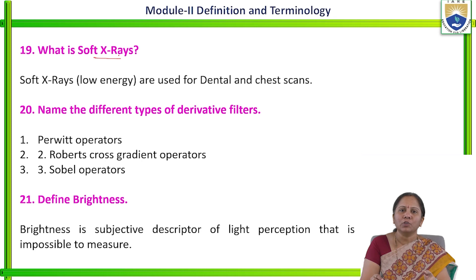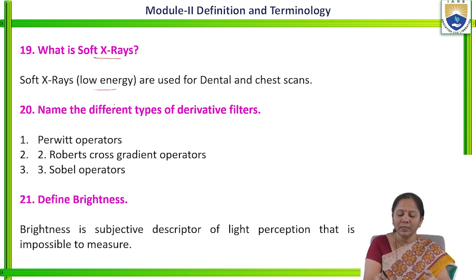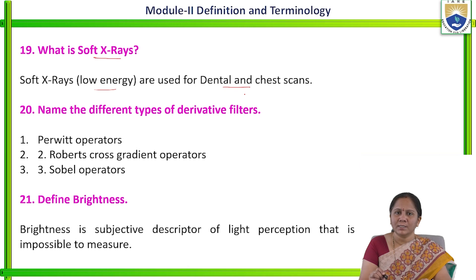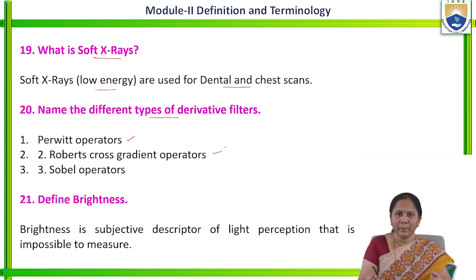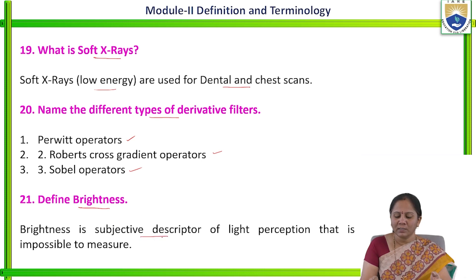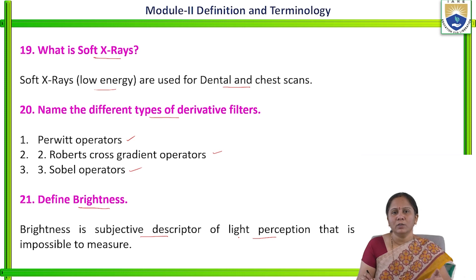What are soft X-rays? Soft X-rays have low energy and they are used for dental and chest scans. Different types of derivative filters are the Prewitt operator, Roberts cross gradient operator, and Sobel operator. Define brightness: brightness is a subjective descriptor of light perception and it is not measurable.